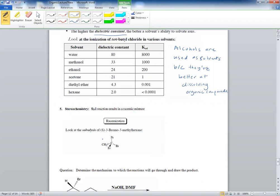So if you have this group—by the way, this is S-3-bromo-3-methylhexane. I'll show you how that looks.